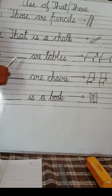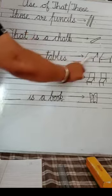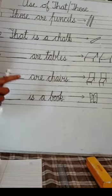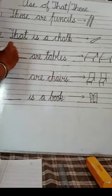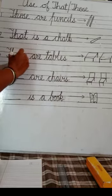Next one. Dash are tables. Look here. There are two tables, means more than one. So what we will use here? Those are those. Those are tables. Right?